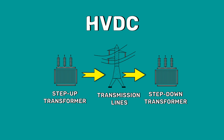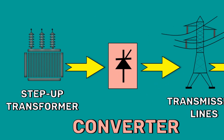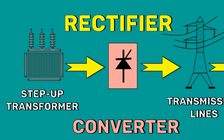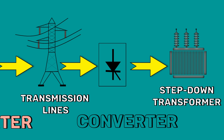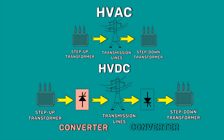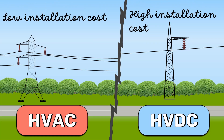High voltage DC transmission is very similar to high voltage AC transmission, except that it requires a converter at each end of the transmission line. The sending end converter receives the input from the step-up transformer and converts this high voltage AC electricity into high voltage DC electricity. This converter is called the rectifier. The receiving end converter receives the high voltage DC input and converts it back to high voltage AC. This converter is called the inverter. The presence of converters will increase the installation cost of the HVDC transmission system, as these semiconductor converters are very expensive.